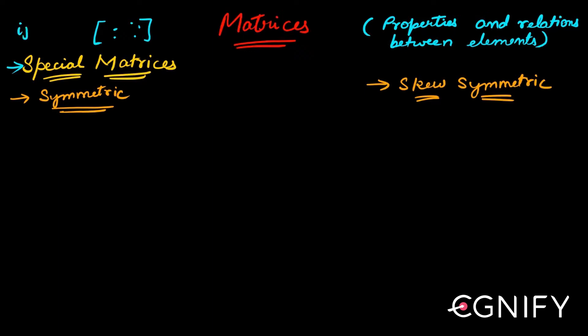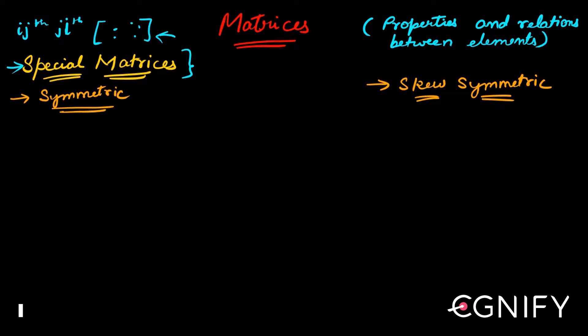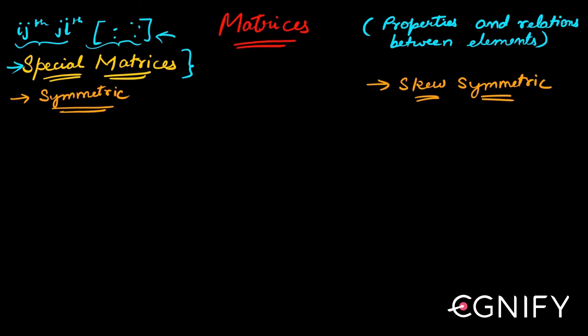Here we will study this classification majorly on the properties and relations between elements. So basically, the ij and ji positions are what we will majorly discuss. Based on the relationships between them and the properties that these matrices possess, this form of classification comes from these two things — it's not merely based on arrangement of elements or which element is zero. That's why it's put under a separate topic called special matrices.